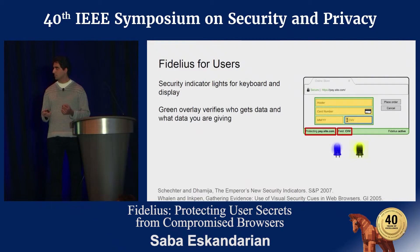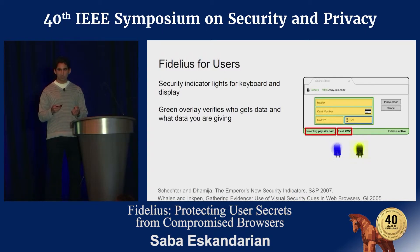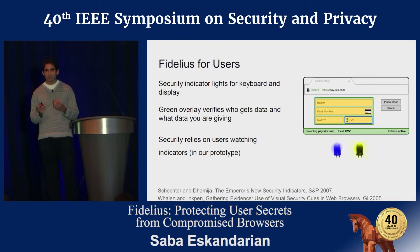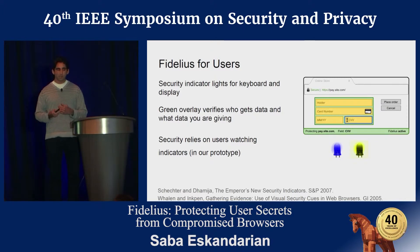For the trusted display, a green overlay across the bottom of the screen indicates which remote origin the enclave has connected to — the only party allowed to see the sensitive information being typed. Security here relies on users watching security indicators, which research has shown to be ineffective. This is just for prototyping. A real deployment would incorporate secure attention sequences and other mechanisms to help users properly understand when Fidelius is active.